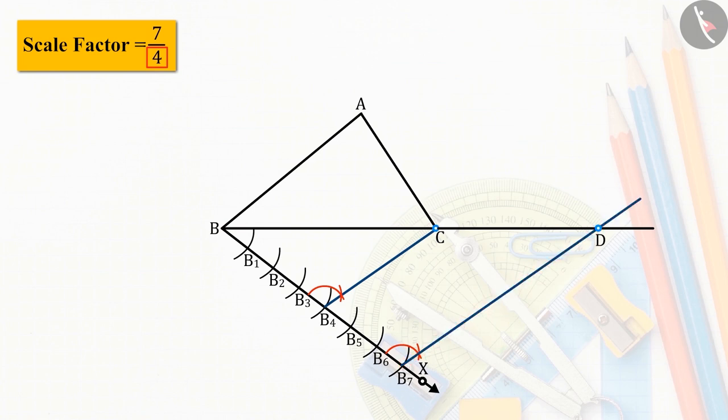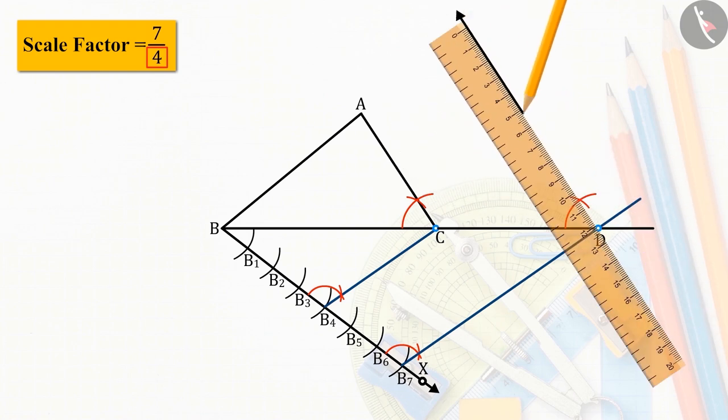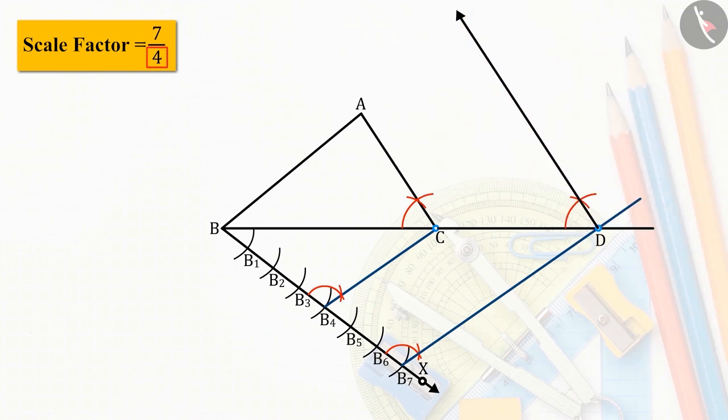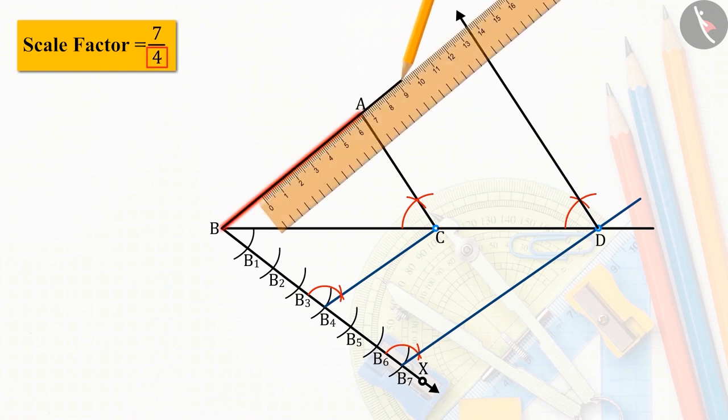Now from point D, parallel to side AC, let us draw a line. On extending BA, it will intersect at point E.